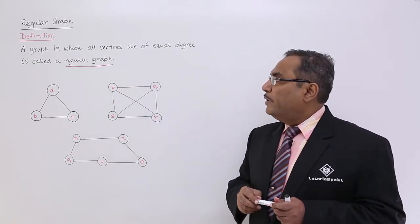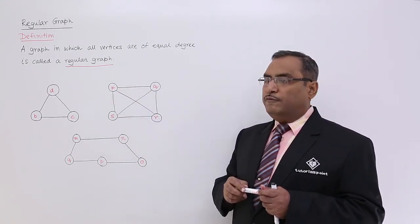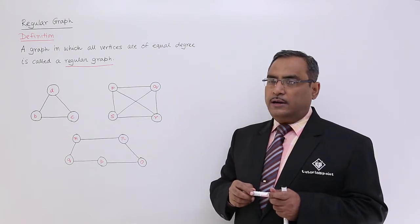A graph where all vertices are of equal degree is known as a regular graph.